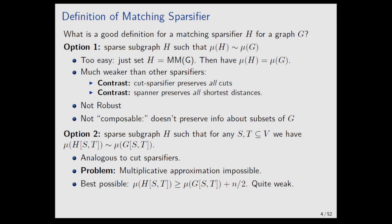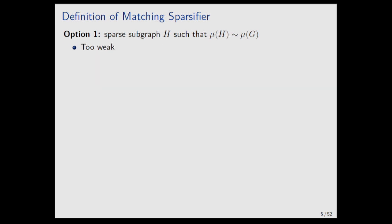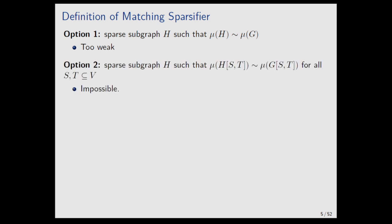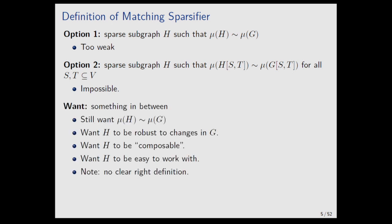So this is basically too much to hope for. That leaves us with option one, which is too weak, and option two, which is impossible. We want something in between — a sparsifier that preserves the maximum matching as a minimum requirement, but also has nice properties: robust, composable, easy to work with. These are purposefully vague, because without a perfect sparsifier like a cut sparsifier, there isn't going to be one right answer. You'll have to compromise depending on the setting. But the point of this talk is to show there is a sparsifier that captures many of these properties and has many applications.